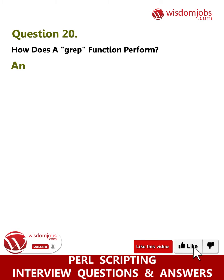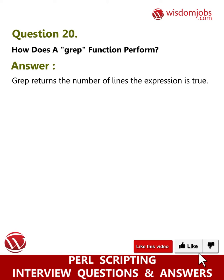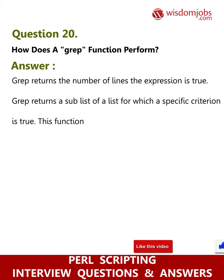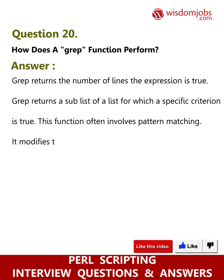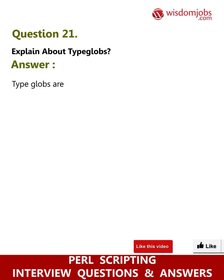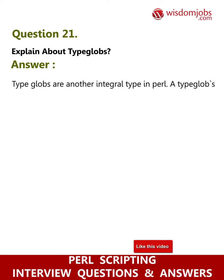Question 20: How does a grep function perform? Answer: grep returns the number of lines the expression is true. grep returns a sub-list of a list for which a specific criterion is true. This function often involves pattern matching. It does not modify the elements in the original list.